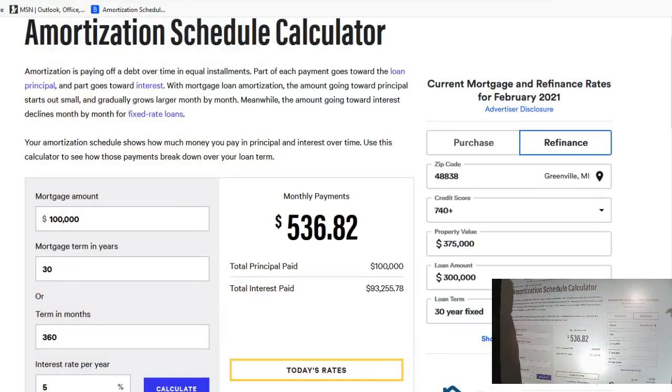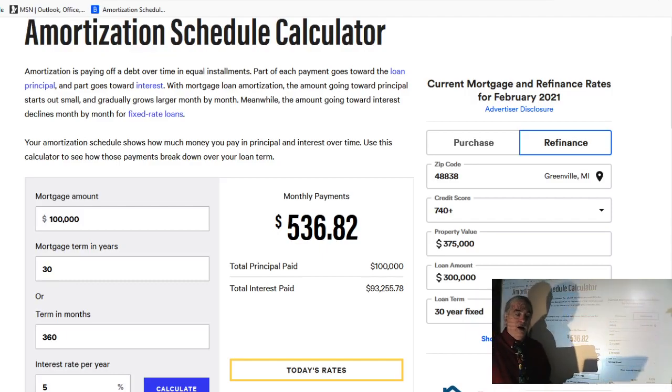Okay, this is an amortization schedule calculator. This calculator is to help you figure out what your payments are. Now this calculator only tells you what your interest and principles are. They're not going to tell you any type of money that's paid in advance for taxes and stuff like that or if you're paying points or any of that kind of stuff.